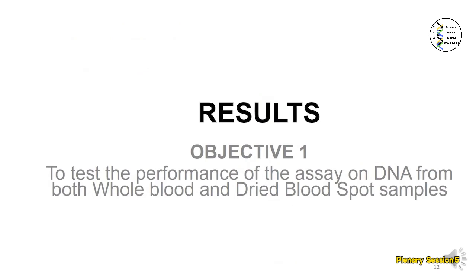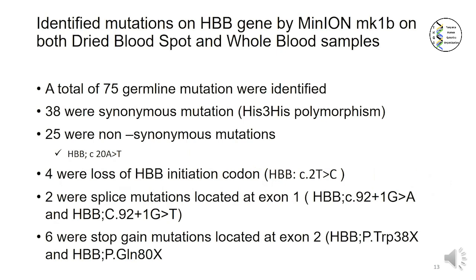The result for objective one — to test the performance of the assay on DNA from both whole blood and dried blood spot — showed that we were able to identify mutations at the beta-globin gene locus on both whole blood and dried blood spot samples. A total of 75 germline mutations were identified: 38 were synonymous mutations, 25 were non-synonymous mutations, 4 were a loss of the HPV initiation codon, 2 were splice mutations located at exon 1 — and the panel shows the specific mutations identified at exon 1 — and 6 were stop-gain mutations located at exon 2, with the panel showing exactly what mutations were identified at exon 2.